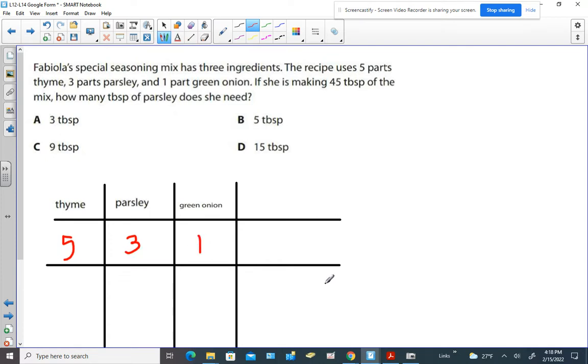Now the thing that a lot of sixth graders forget is that it's good to add a fourth column here, which would be the total. And then you have to ask yourself, how do I get the total? It's the total mix.